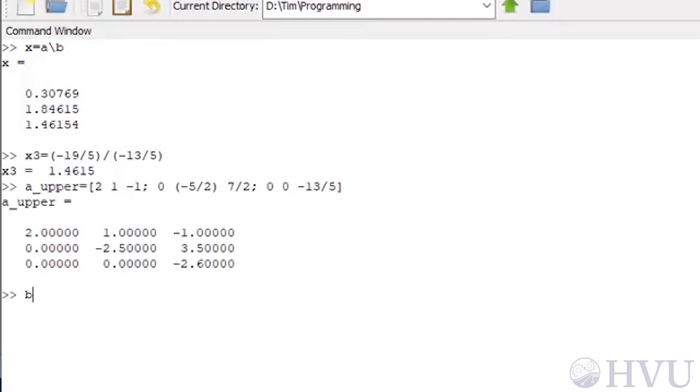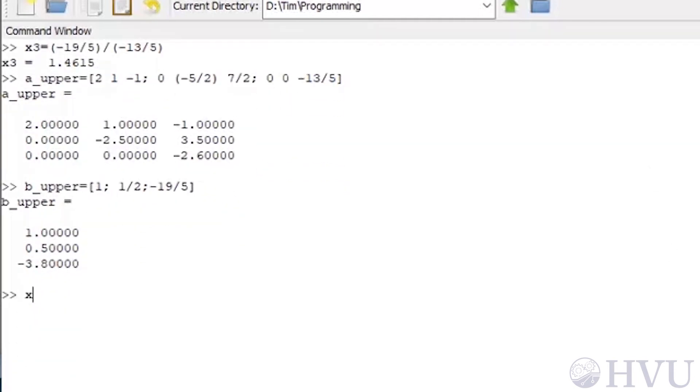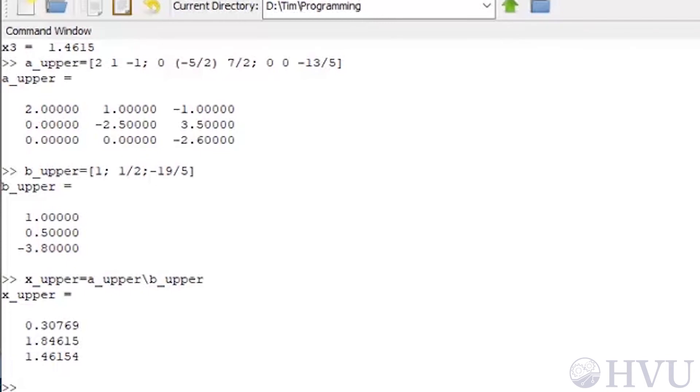And, b_upper equals 1, semicolon, 1 half, semicolon, negative 19 over 5. Then, x_upper equals a_upper backslash b_upper. The solution is the same as that I got from the original equations, so both forms of the system of equations are equivalent.